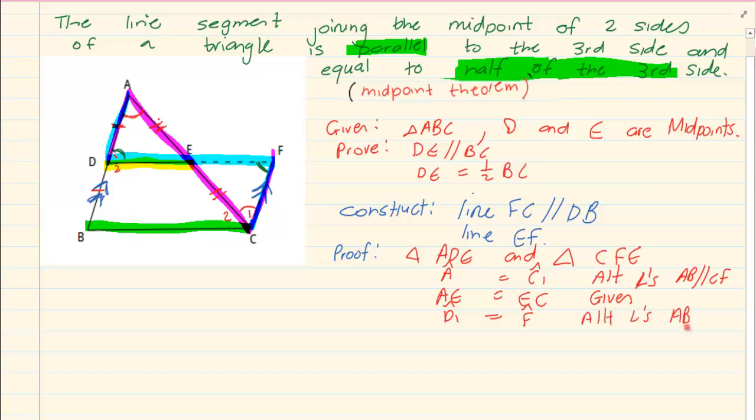Why? Because AB is parallel to CF. Now if they are parallel, then I can immediately say that these two triangles, so triangle ADE is congruent to triangle CFE.